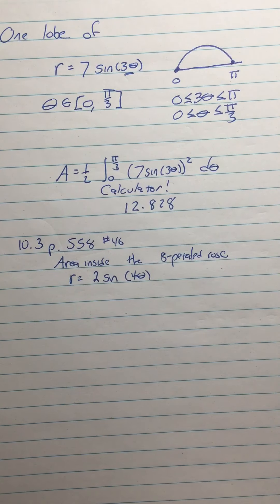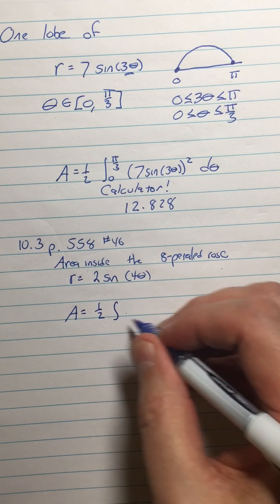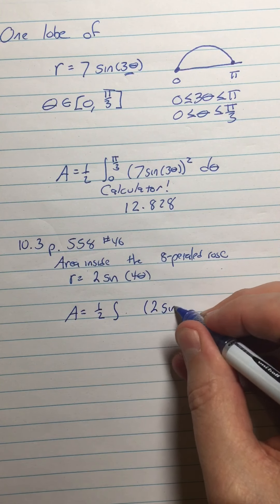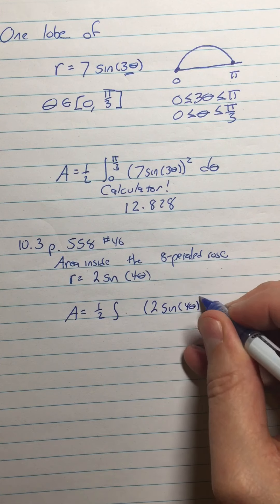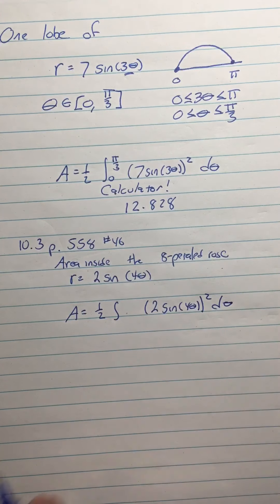It's easy enough to say the area is going to be one half the integral of 2 sine of 4 theta squared d theta. Let's throw that in the calculator. The only question is the limits.